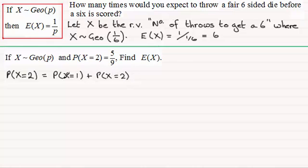And from this we should know the probability of X equaling 1, that we get a success on the first go, would be p. And the probability X equals 2 would be a failure which we call q times the probability of then getting a success which would be p. Now q is the same as 1 minus p, so we've got p plus (1 - p) times p.